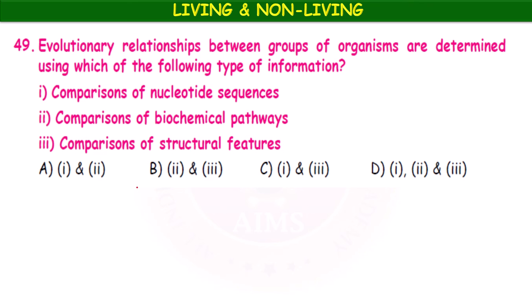The evolutionary relationships between groups of organisms are determined using which type of information — comparisons of nucleotide sequences, comparisons of biochemical pathways, or comparisons of structural features? All three are correct, so the answer is option D — all of the above.